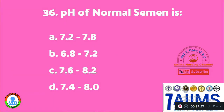Question 36: The pH of normal semen is: Option A: 7.2 to 7.8. Option B: 6.8 to 7.2. Option C: 7.6 to 8.2. Option D: 7.4 to 8.0. The normal pH of human semen is 7.2 to 7.8, according to WHO.